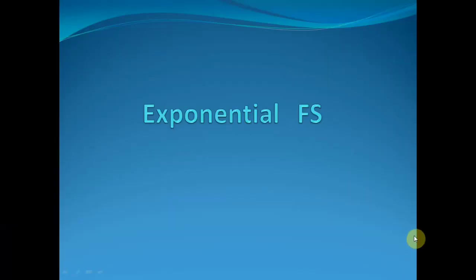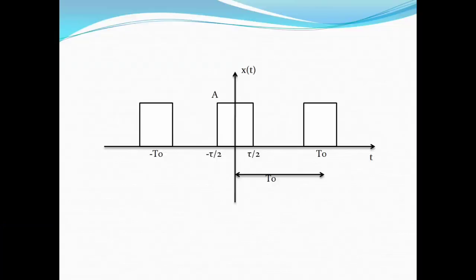Hello and welcome to the video lecture on exponential Fourier series for the rectangular waveform shown in the figure. This waveform has an amplitude of A. The fundamental time period is T0, and the waveform limits are from minus tau by 2 to plus tau by 2.